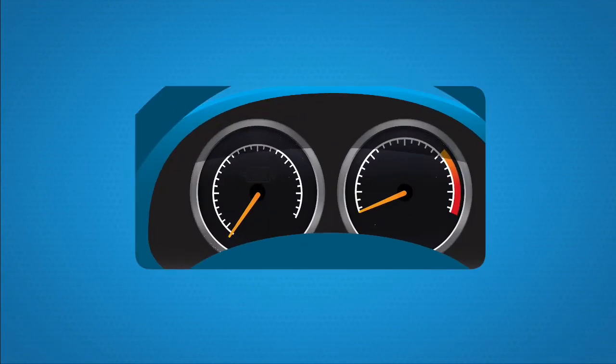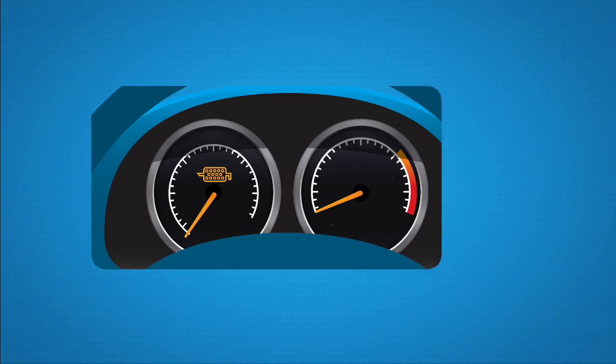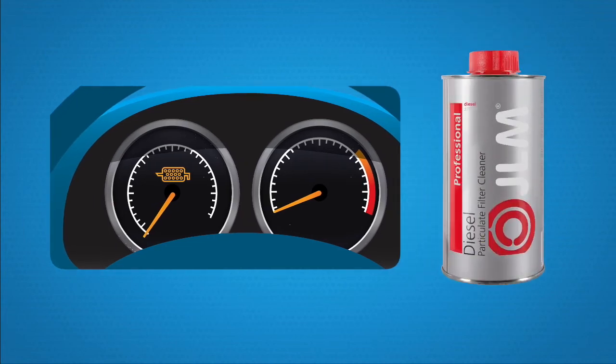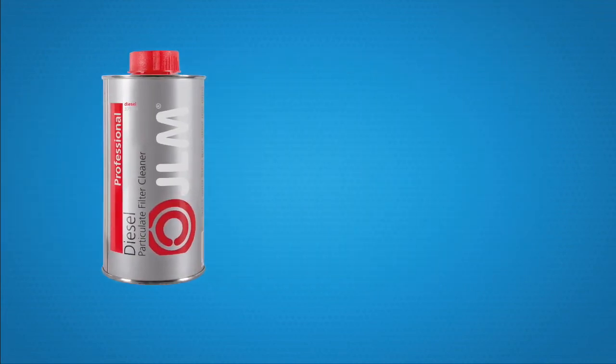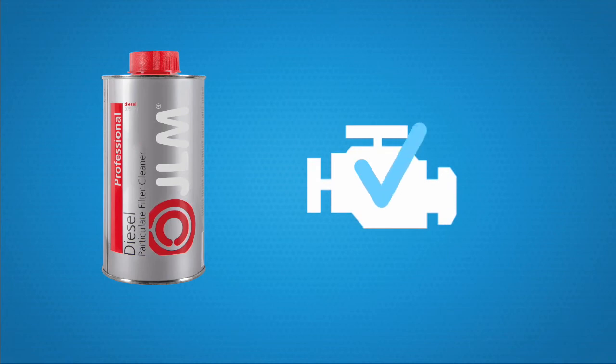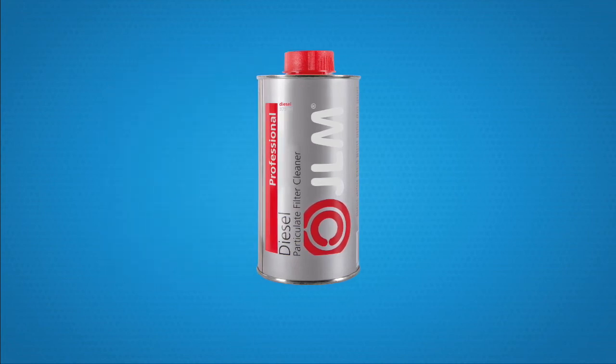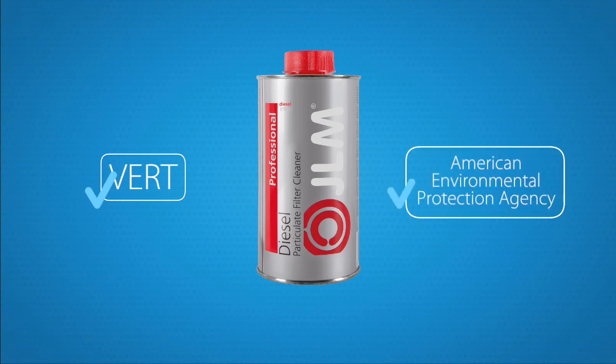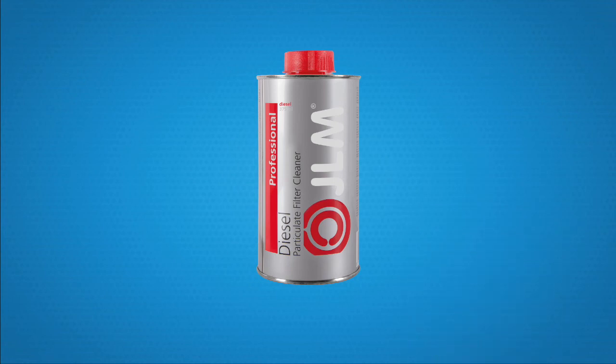Step 2: When the diesel particulate filter warning light on your dashboard is illuminated, use the JLM DPF Cleaner. This cleaner is perfect for all modern diesel engines and is formulated with a high concentration of the active working ingredient. The JLM DPF Cleaner complies with the most stringent VERT requirements, the Swiss Environmental Standard, and those of the U.S. Environmental Protection Agency. So you can be sure that you will be able to solve the problem by non-toxic, but extremely effective means.